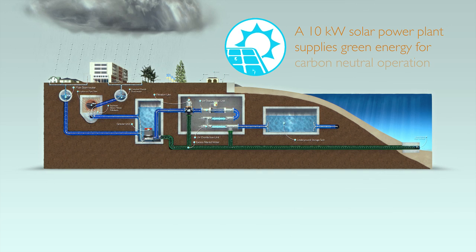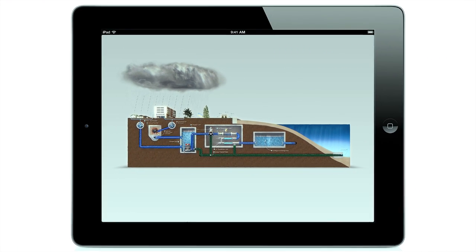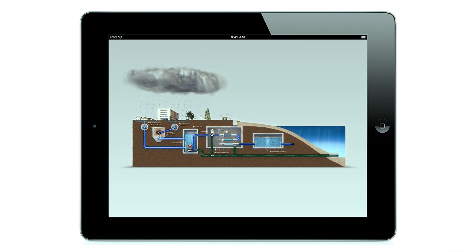A 10 kilowatt solar power plant supplies green energy for the carbon neutral operation of the stormwater scheme. Control of the scheme is fully automated and can be controlled and monitored remotely via a tablet device using wireless technology.